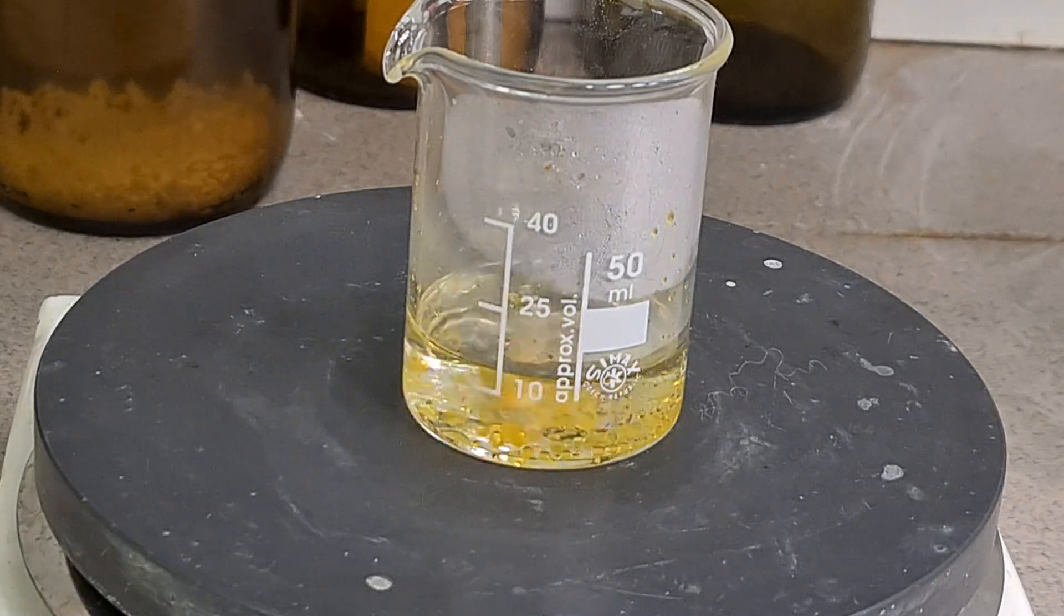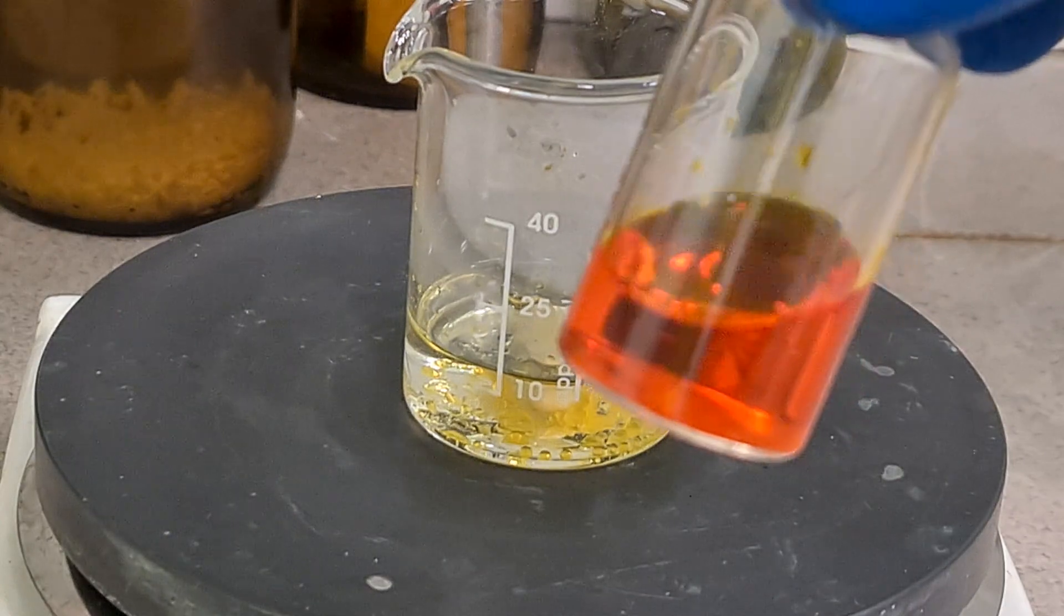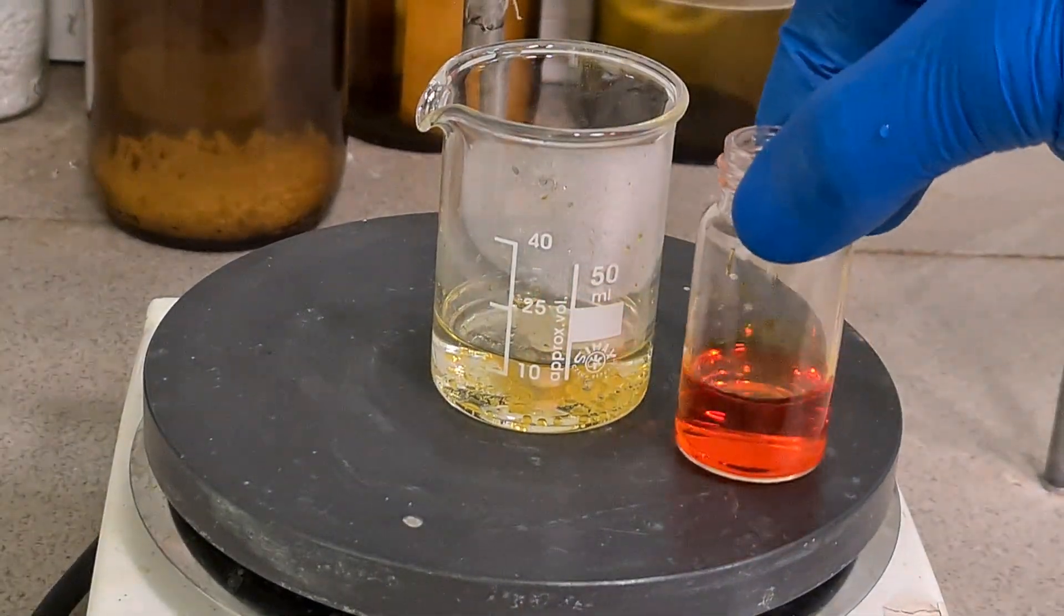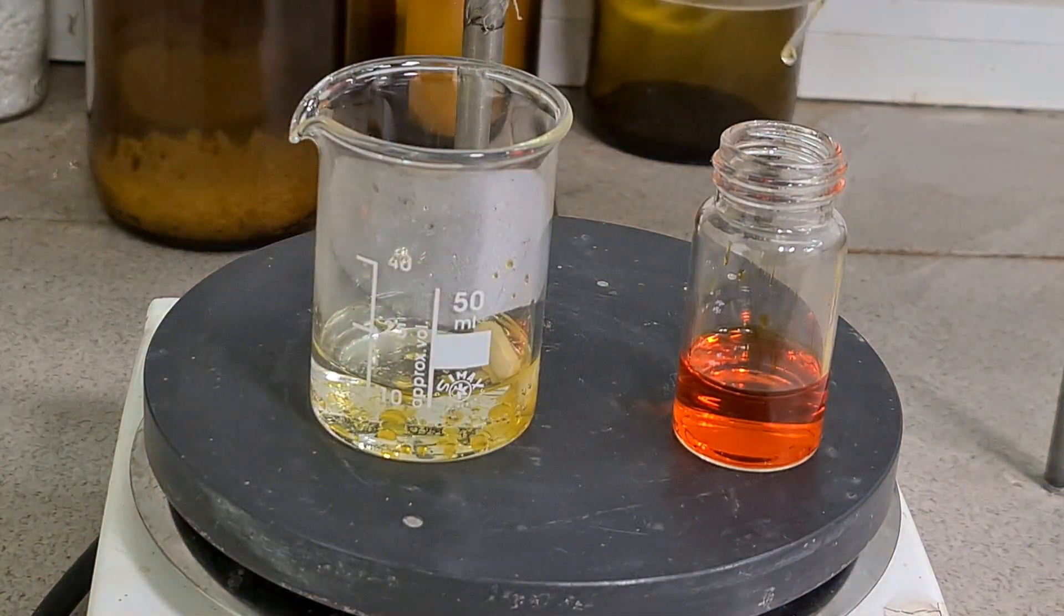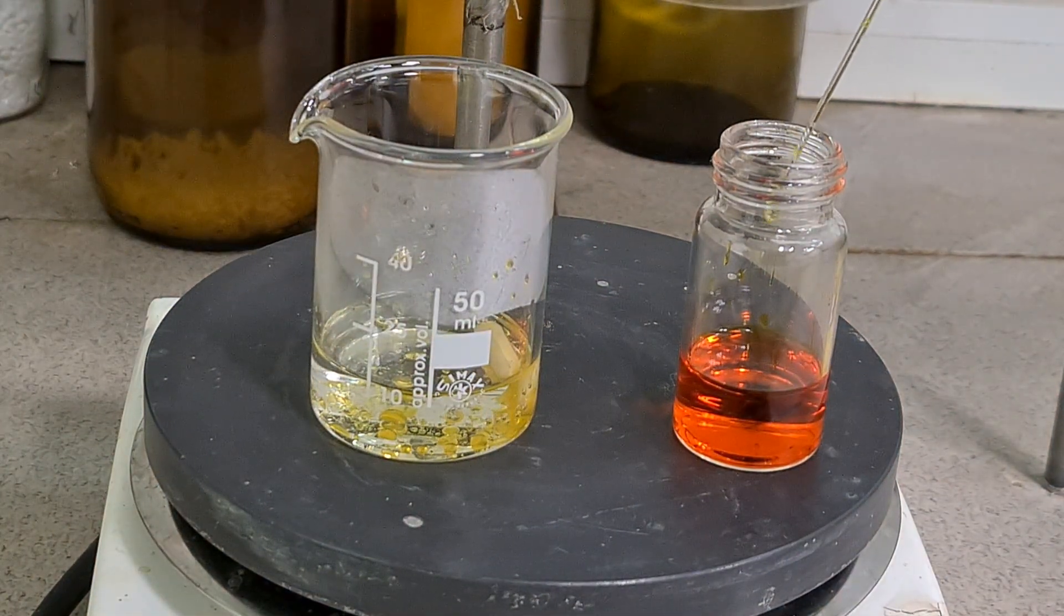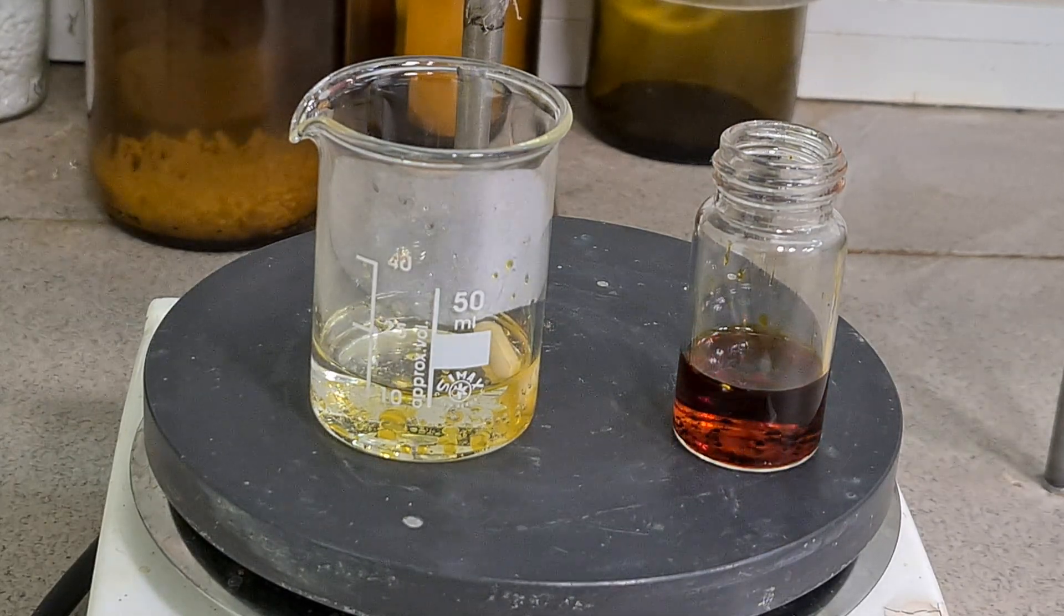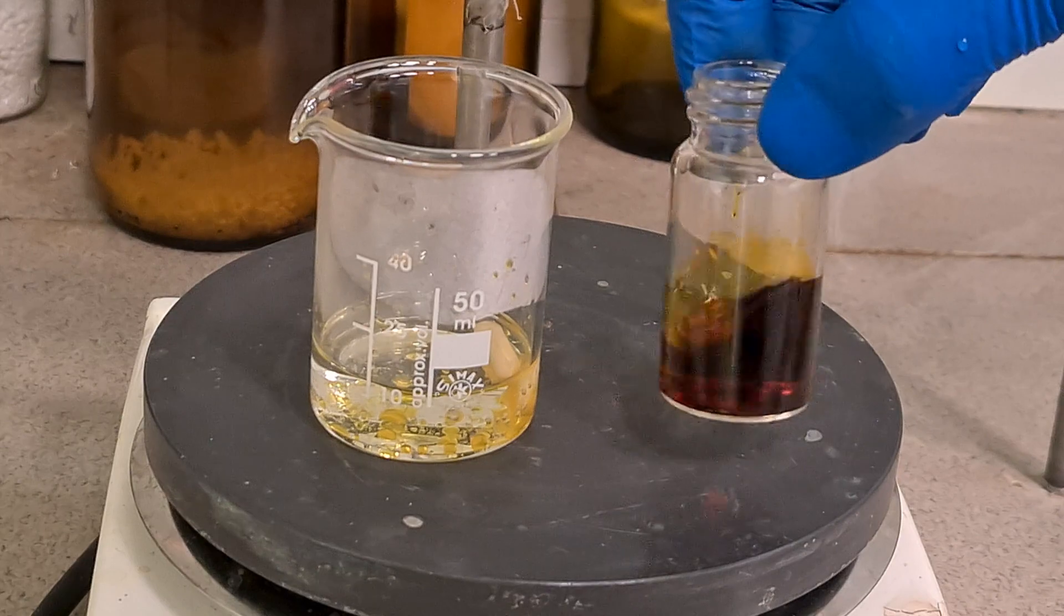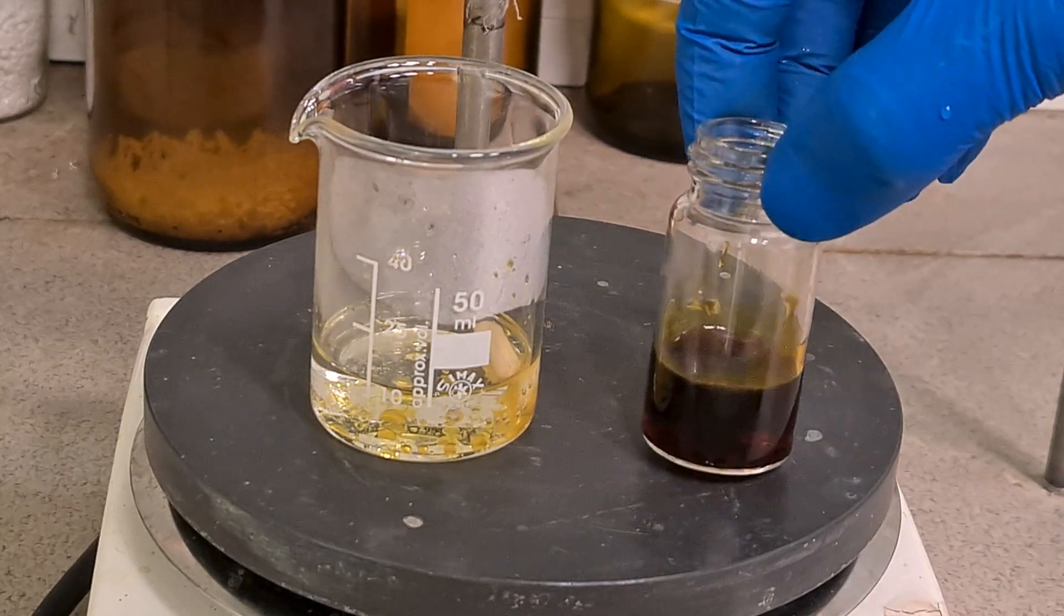15 minutes later, I have tested it for presence of aniline by acidified solution of potassium dichromate. Yes! It works! Aniline black has formed instantly. We have successfully reduced nitrobenzene into aniline.